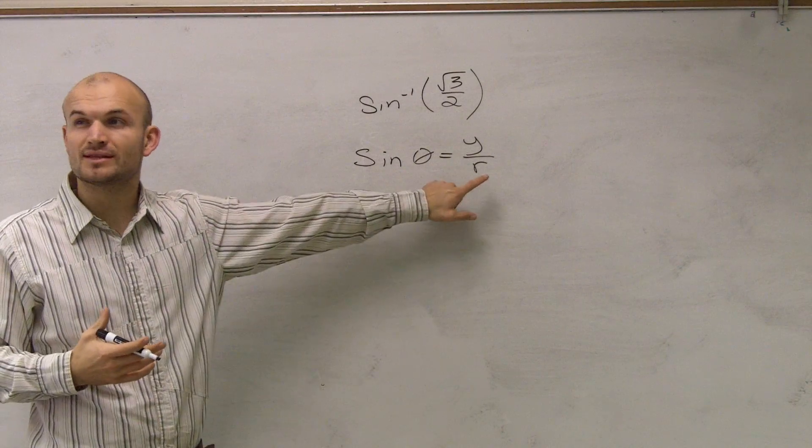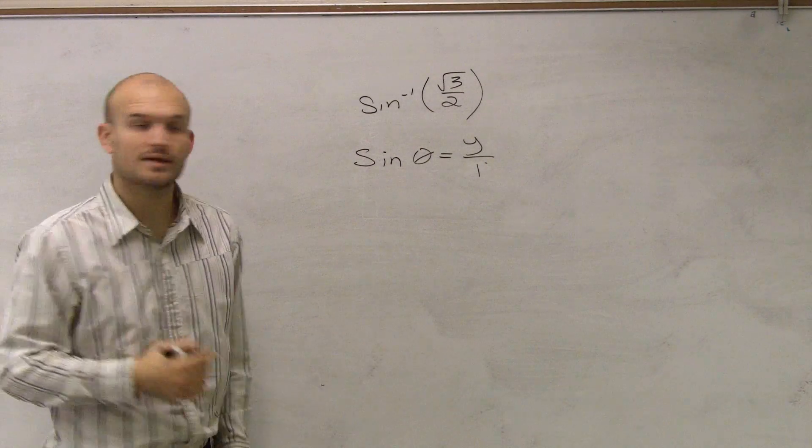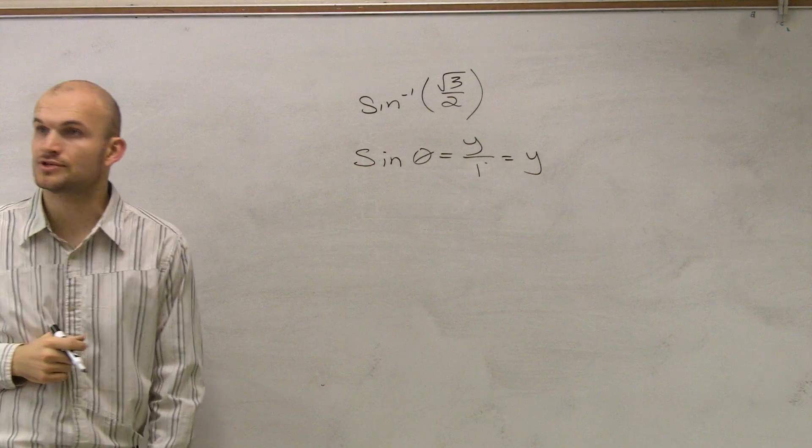Remember, when we're dealing with the unit circle, our r is 1, right? So therefore, we're really just dealing with the y value of a coordinate point on the unit circle.